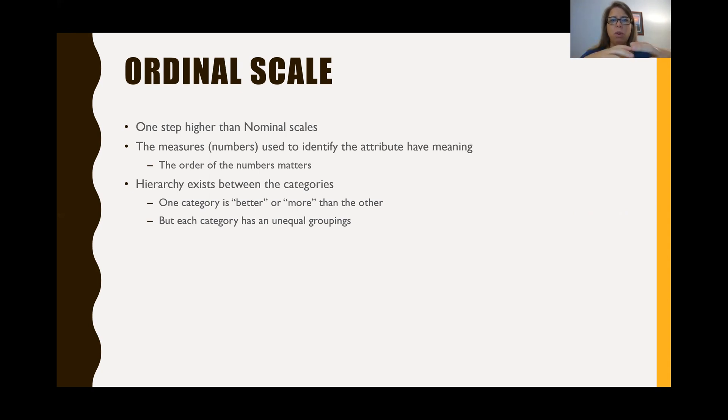Now the difference between an ordinal scale and an interval scale and a ratio scale is that the categories have unequal groupings. And this is an important note. So you have a hierarchy, but the groupings of the categories are unequal, and that makes it an ordinal scale. And they're unequal either because of the inability to capture all of the options. So this happens a lot with income where we can't capture the highest level of income. So maybe our last category is 150 plus. That 150 plus automatically makes it an unequal category. And so it is now considered an ordinal scale.